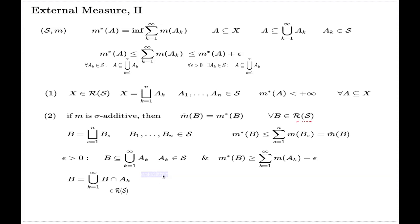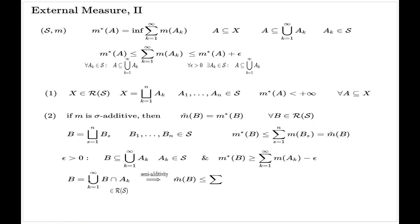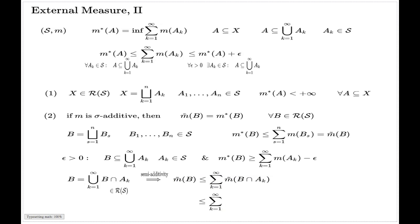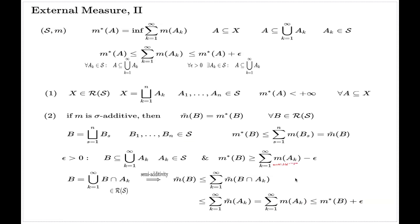Although this is a countable union, since B is in the minimal enveloping ring, we can use the semi-additivity of the M̃ measure on this ring. By semi-additivity, M̃(B) is less than or equal to the sum of individual M̃ measures of the intersections A_k ∩ B. These intersections are subsets of A_k, so their measures are at most M̃(A_k). Since A_k comes from the semi-ring, M̃ coincides with the original M on A_k.